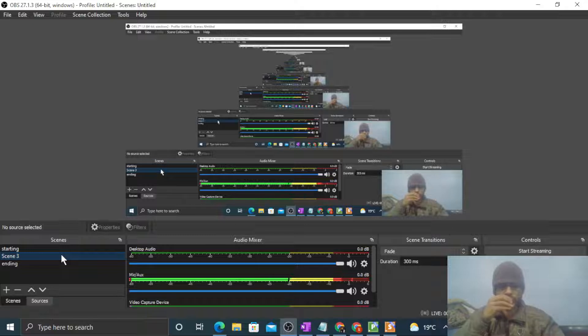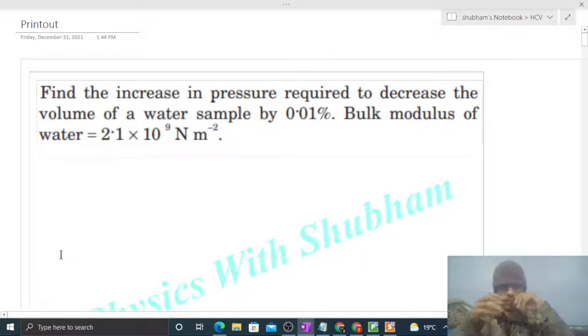Hi everyone, today let's discuss one interesting problem. It says find the increase in pressure required to decrease the volume of a water sample by 0.01%. Bulk modulus of water is given.